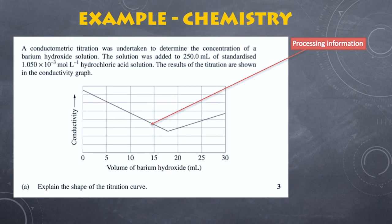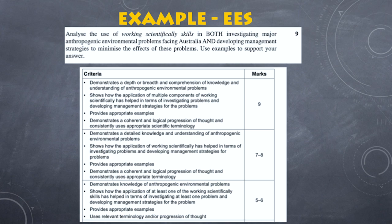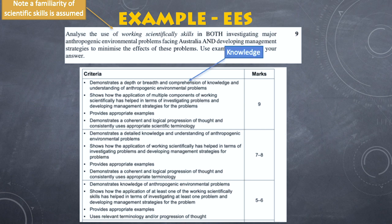Here's a chemistry example: again processing information with a graph, and you need good knowledge to explain the shape of that graph. Then a physics example where a student's experiment is described and you must justify the validity of the student's claim — this is about designing experiments. You're not designing the experiment; you're asking is their design good? You need a solid understanding of experimental design to address that properly. Finally, an earth environmental science nine-mark question where there's an expectation you understand working scientifically skills. The marking guidelines show you must demonstrate depth of knowledge and communicate it coherently and logically using correct terminology.